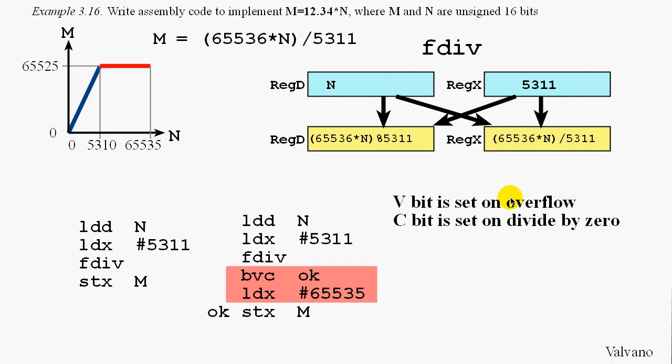And we could have checked the overflow bit after the FDIV instruction. Such that, if the V bit is clear, that means the result is correct. And we can store that value X into register M. However, if the V bit happened to be set, then we're in this red portion of the curve. And in that case, what we could do is maximize the output. Put a ceiling on that output of 65535. And that means when the output M is equal to 65535, we've had an overflow.